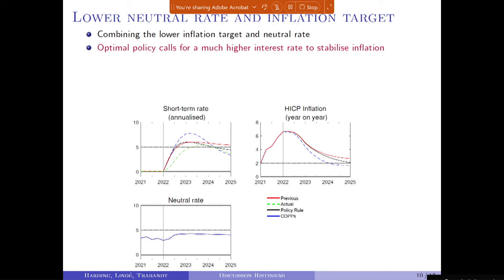If you then do optimal policy with the lower inflation target, this calls for a much higher interest rate, because the target is now lower and you have to bring inflation lower towards the end of the period — that's why you want quite a bit higher interest rate in the optimal case.